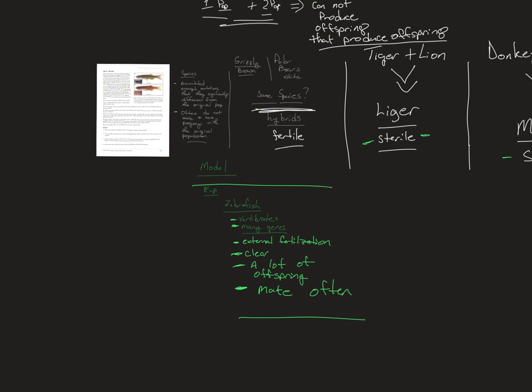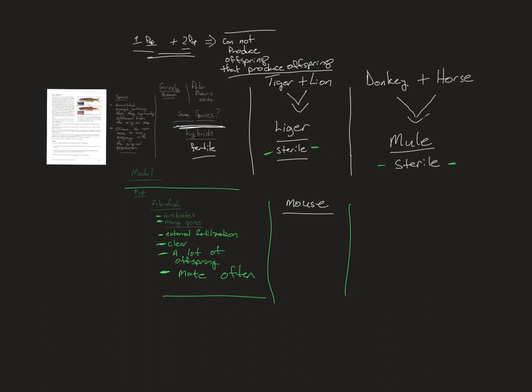Zebrafish are used in medical research and genetics research — a very powerful model organism. Another model organism is the white mouse. Mice are common for many of the same reasons, except they're not transparent and don't externally fertilize. But they're closer to humans because they're mammals, and we share more genes with them than with zebrafish.